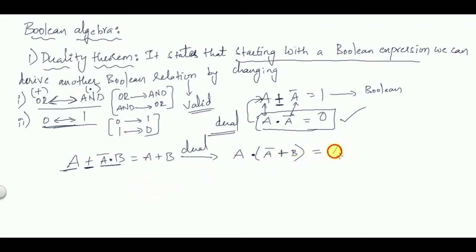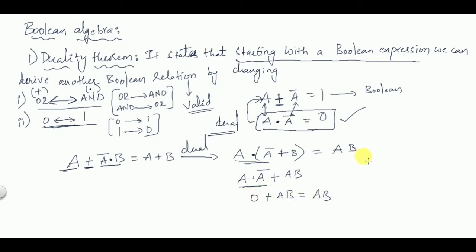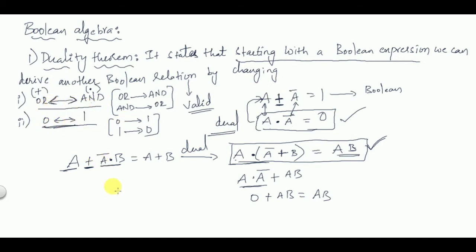To verify: a · (ā + b) = a·ā + a·b by distribution. Since a·ā = 0, we get 0 + a·b = a·b. So this is also a valid relationship and is the dual of the given expression. This is how the Duality Theorem works — just change OR to AND, AND to OR, zero to one, and one to zero.